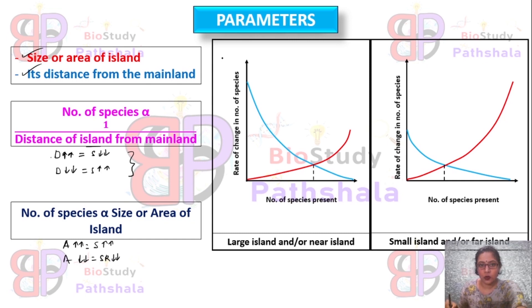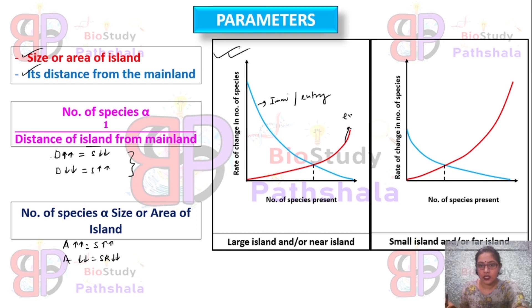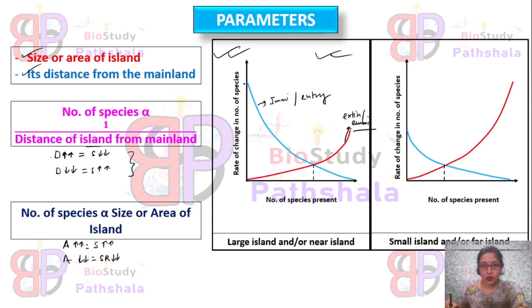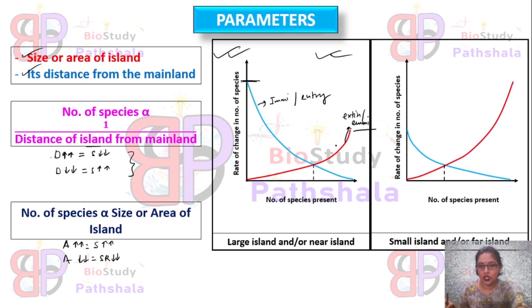Now we will see the graphs. The sky color represents the immigration or entry value, and the red one is for the extinction value. In the first graph, the immigration or entry curve is very high — the rate of entry of species into that particular island is high. The extinction of species from that island is low. These two curves intersect at a point which represents the number of species present on that island at equilibrium.